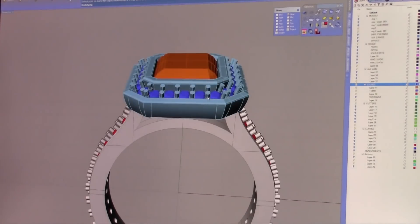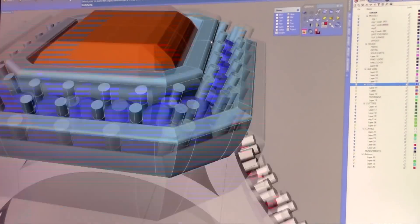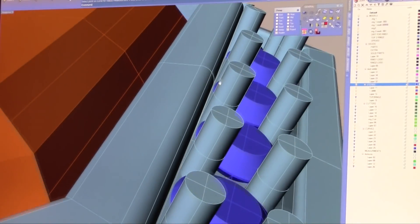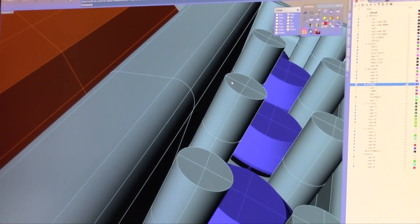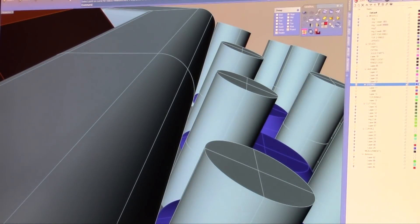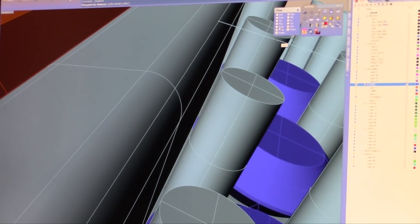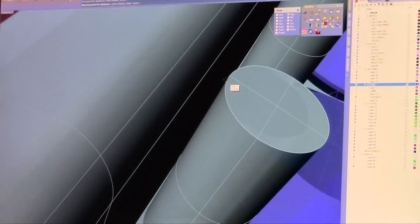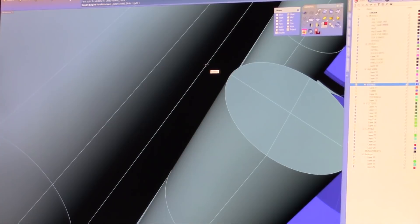You'll notice that we have a bezel here setting the center stone. But the distance between this prong and this wall, it looks big enough but it isn't. If we take a quick measurement, if we go from quad to near, it's not even a tenth of a millimeter.